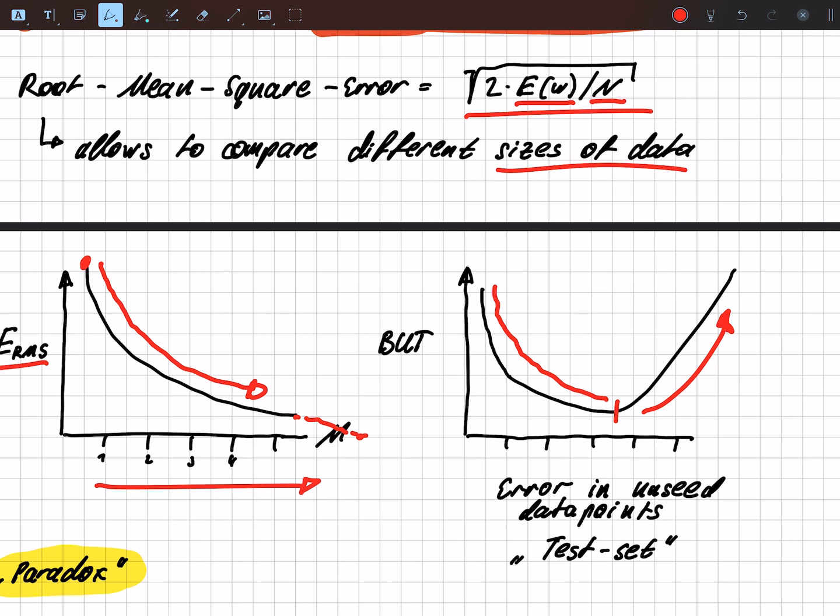This is not something that we want. We want the error to go down as close to zero, the same as in the training set. But this is just the test set. Remember, we do not use those points. We just test if the polynomial that we found is actually a good one.